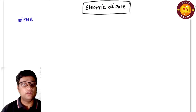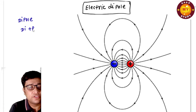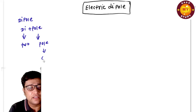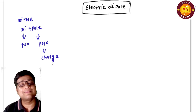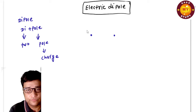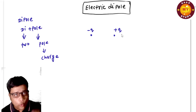When I say electric dipole — dipole means two poles. 'Di' means two and 'pole' means pole, which in electrostatics I will call as charge. So when I place two charges — one is the negative charge and another is the positive charge.